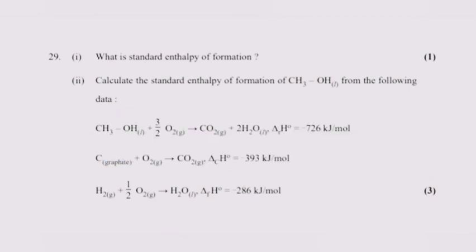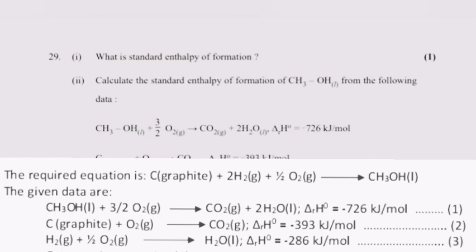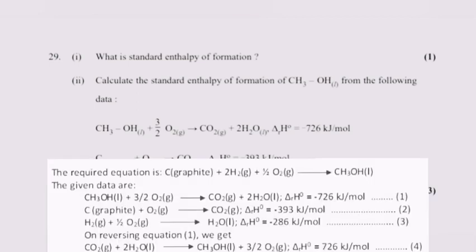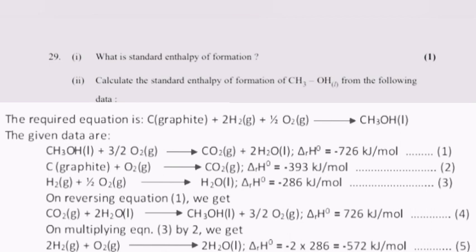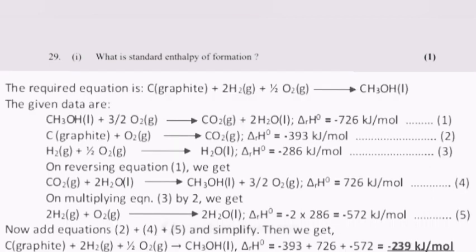Part 2: Calculate the standard enthalpy of formation of CH3OH from the following data. Answer: The required equation is C plus 2H2 plus half O2 gives CH3OH. First step is to write down the given data. Second step is to revise equation 1. Third step is to multiply equation 3 by 2. And the last step, add equations 2, 4 and 5 and simplify. The final answer is minus 239 kilojoules per mole.